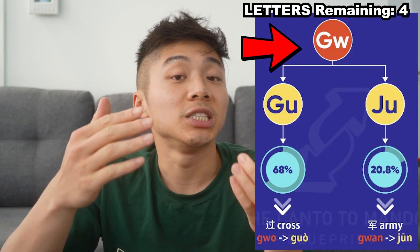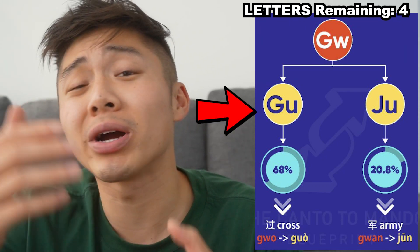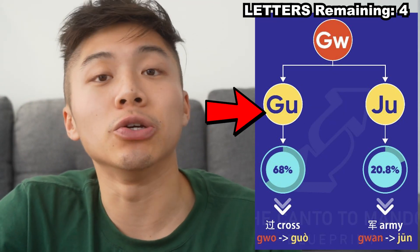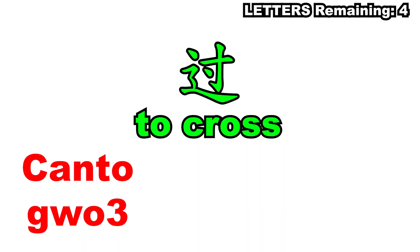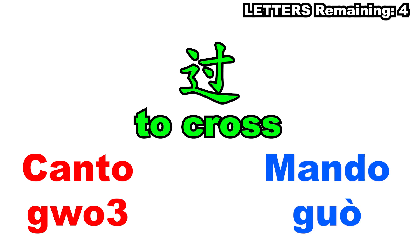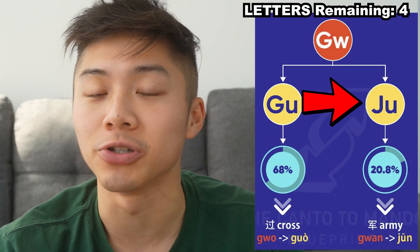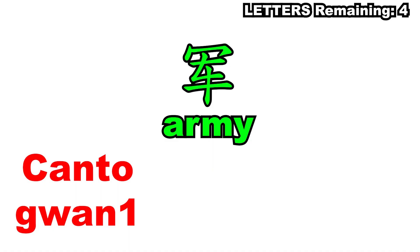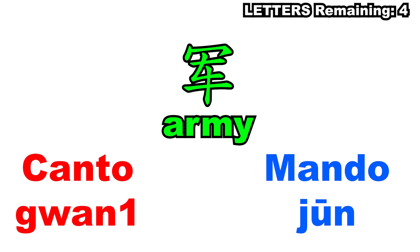Next we have GW in Cantonese, which can either become GU or JU in Mandarin. Most of the time it will be GU — so 'gwo' meaning 'to cross' as in 'gwo ma lou' becomes 'guo ma lu' in Mandarin, very similar. Sometimes it will become JU — so 'gwan' for army becomes 'jun' in Mandarin.